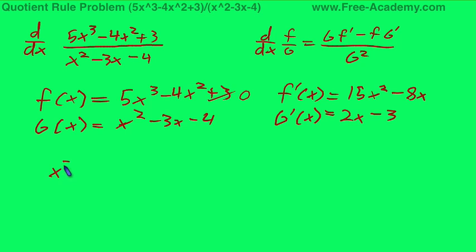g is x squared minus 3x minus 4 in parentheses times the derivative of f, 15x squared minus 8.